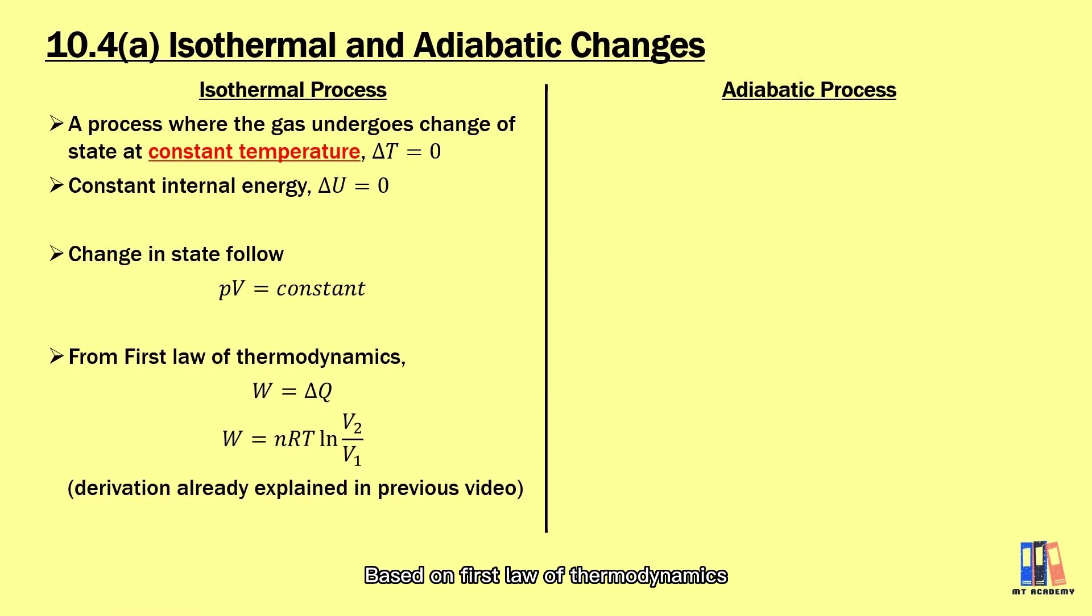Based on first law of thermodynamics, we have delta U equal to zero. Hence, we have W equal to Q which can be derived to nRT ln V2 over V1 as we have discussed in the previous video.